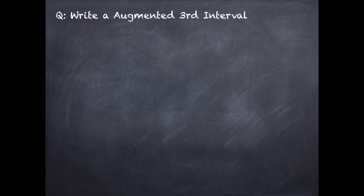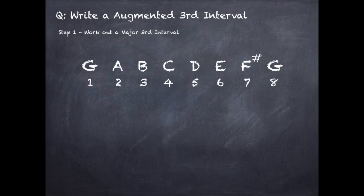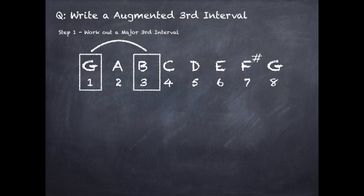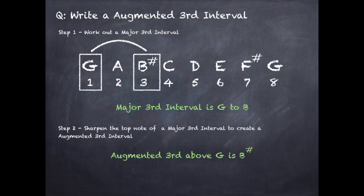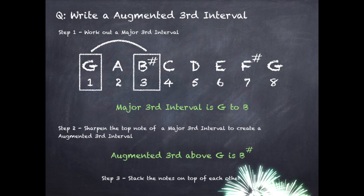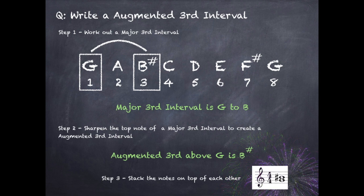To write an augmented third interval, step one is to work out a major third interval. Using G, we go from the first note of the G major scale to the third note. So a major third interval is G to B. Step two: sharpen the top note of the major third interval to create the augmented third interval, so B becomes B sharp. An augmented third above G is B sharp. Step three: stack the notes on top of each other in the stave.